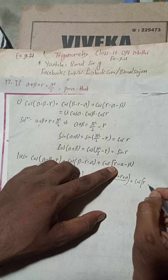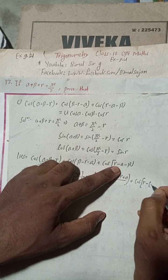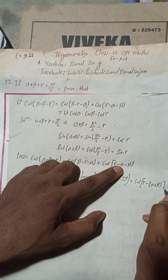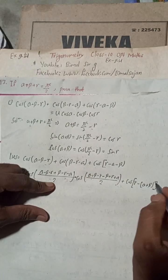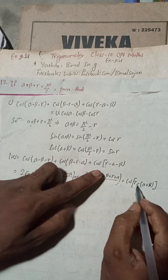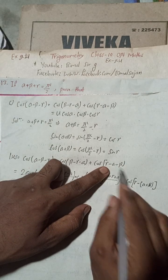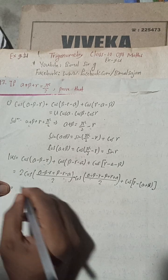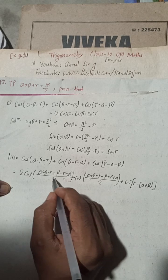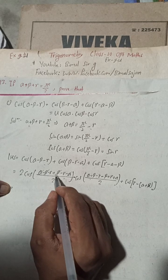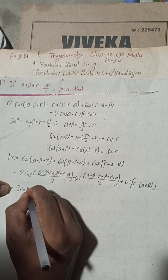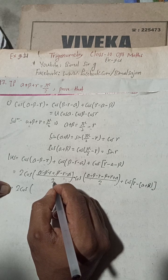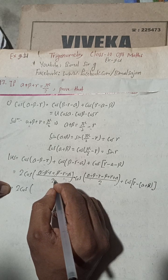Taking minus gamma common, the terms involving alpha and beta cancel — plus alpha minus alpha cancels, plus beta minus beta cancels — leaving 2 cos(minus 2 gamma divided by 2). The 2s cancel, giving minus gamma.